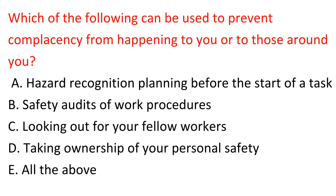Question: Which of the following can be used to prevent complacency from happening to you or to those around you? A. Hazard recognition planning before the start of a task. B. Safety audits of work procedures. C. Looking out for your fellow workers. D. Taking ownership of your personal safety. E. All the above. Answer: E. All the above.